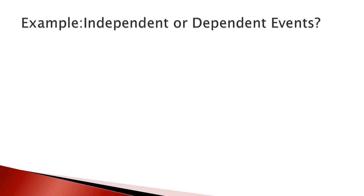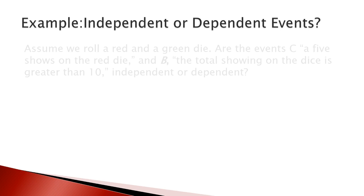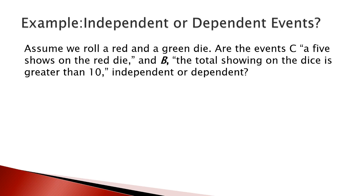Now we look at an example of dependent and independent events. Assume we roll a red and green die. Define event C as: 5 shows on the red die, and event B as: the total showing on the dice is greater than 10. Determine whether C and B are independent or dependent.